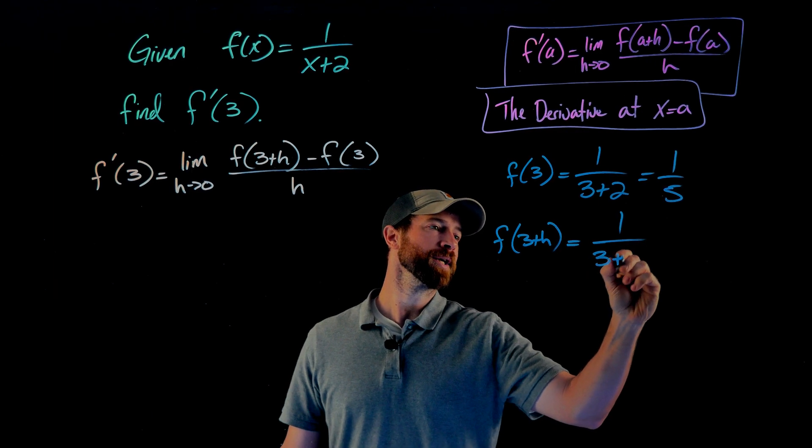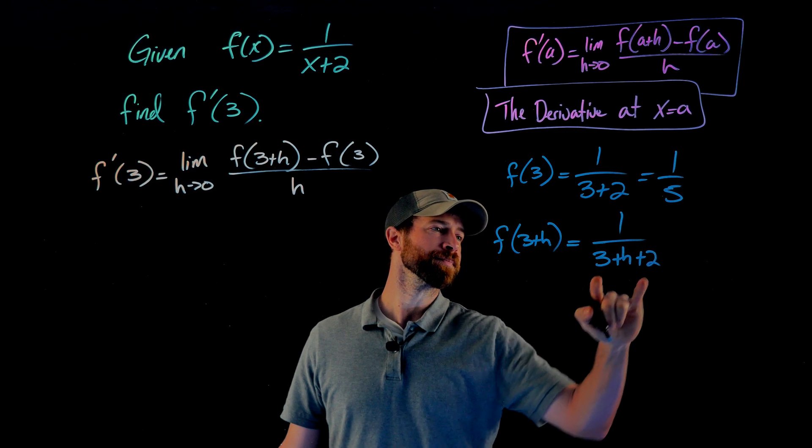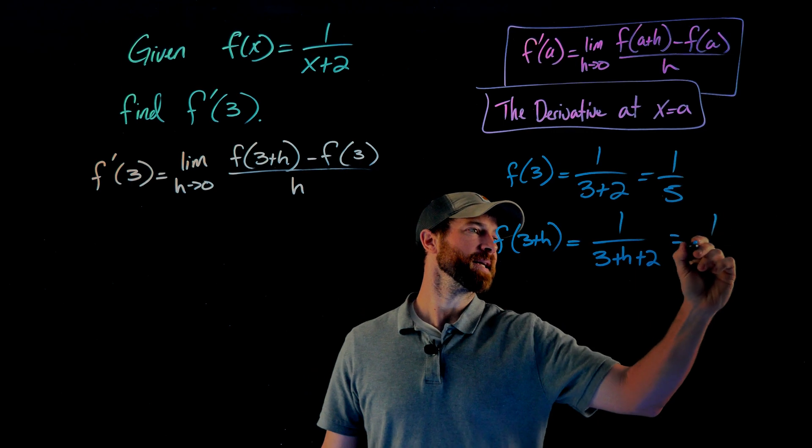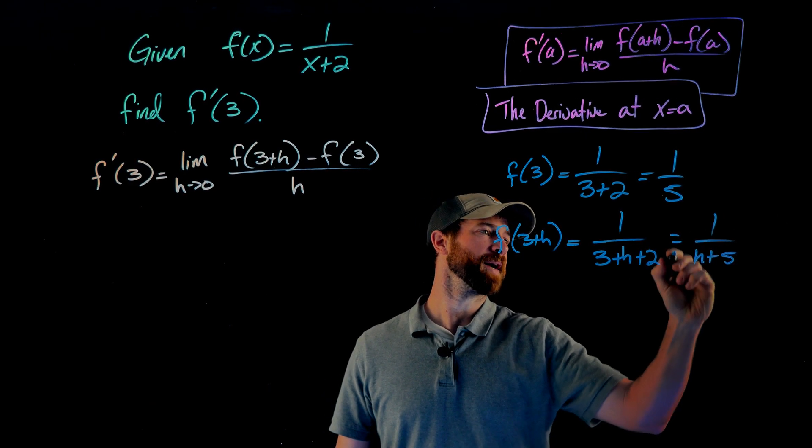So that will look like this, 3 plus h plus 2, which I could simplify down to h plus 5.